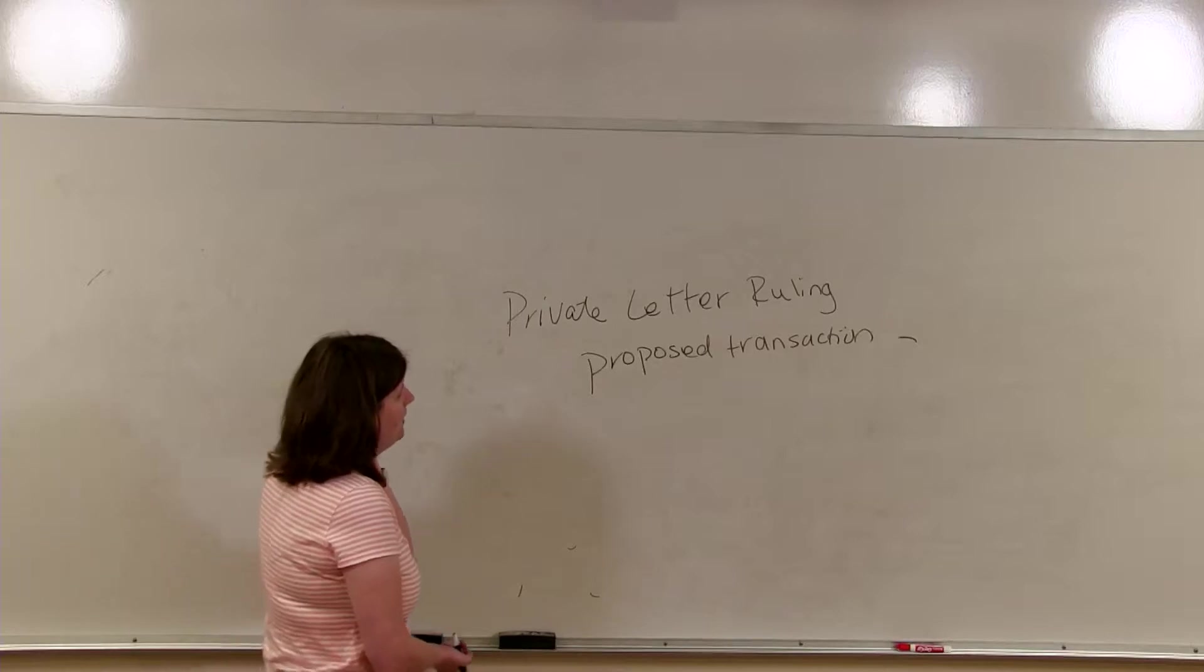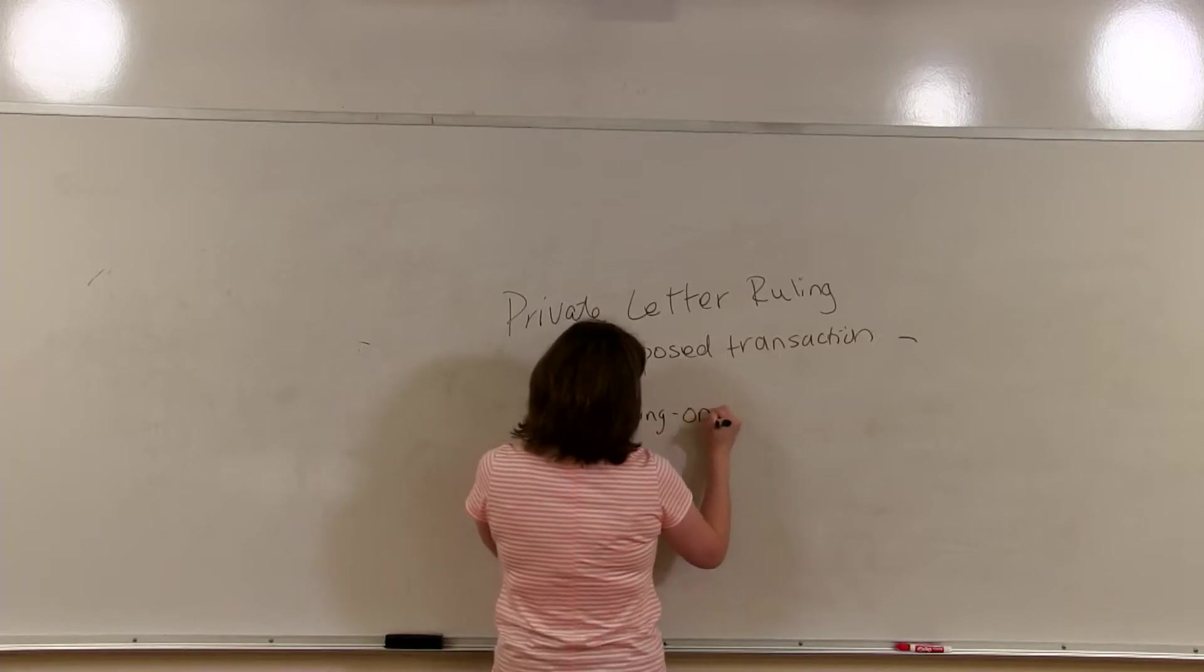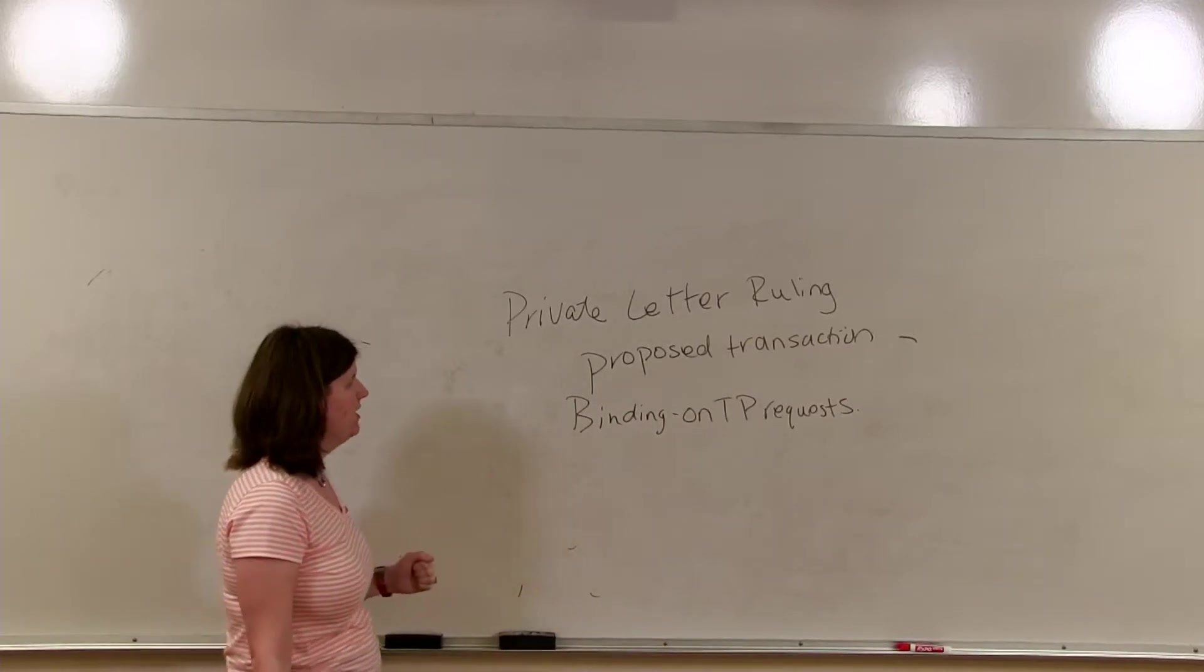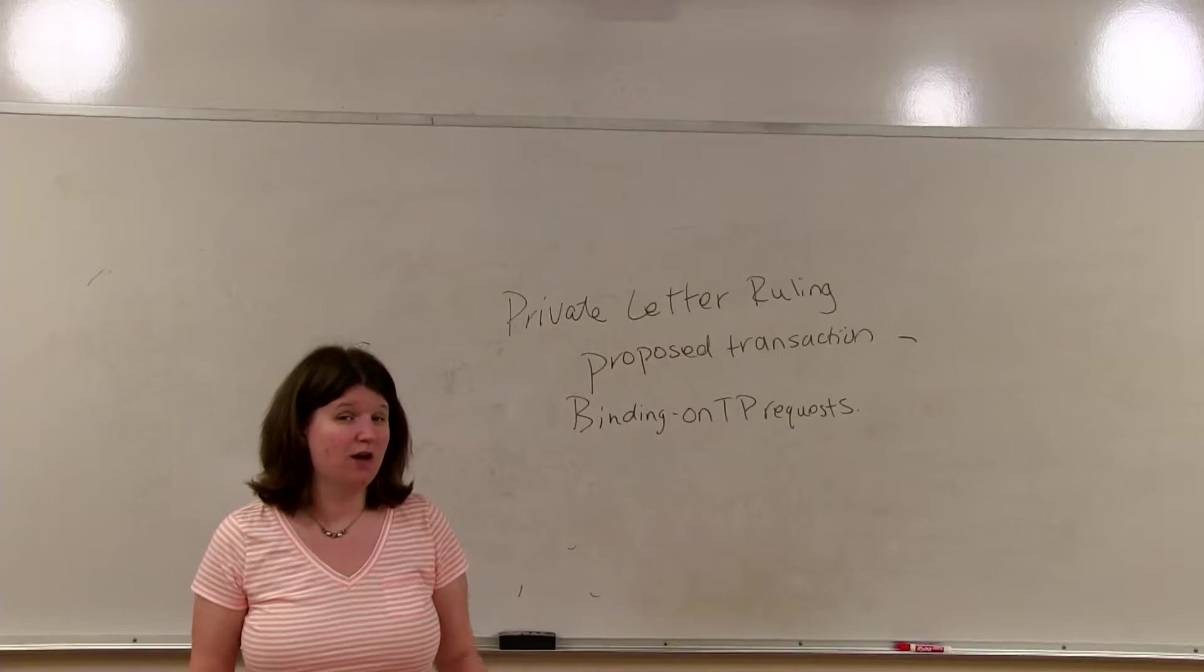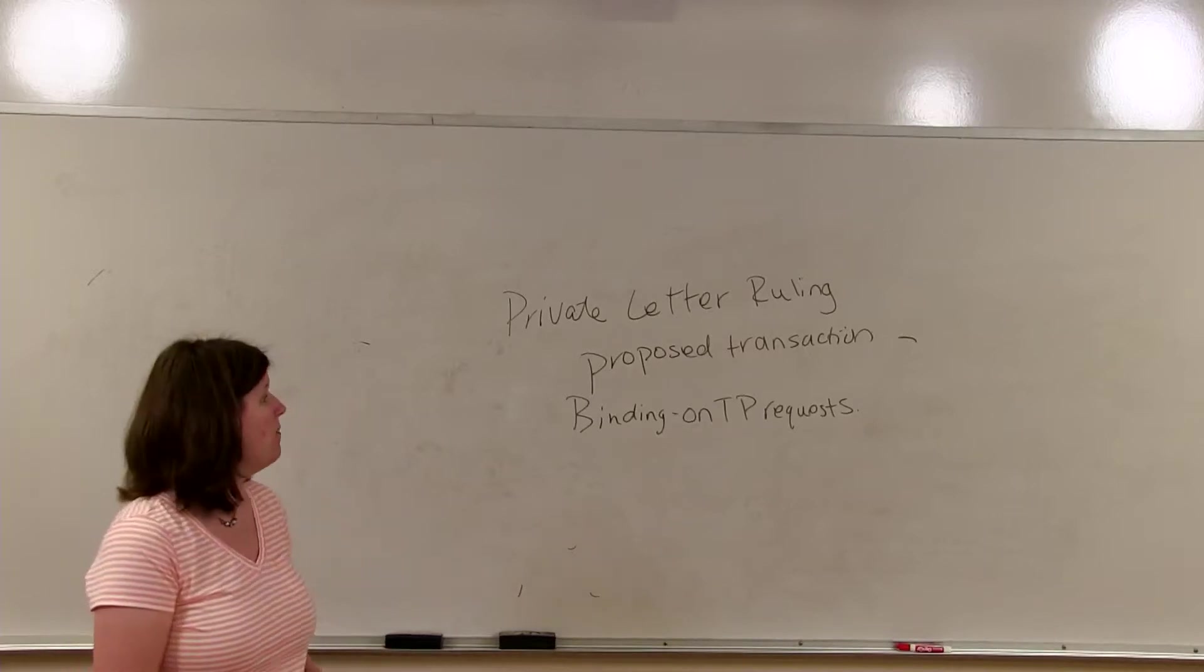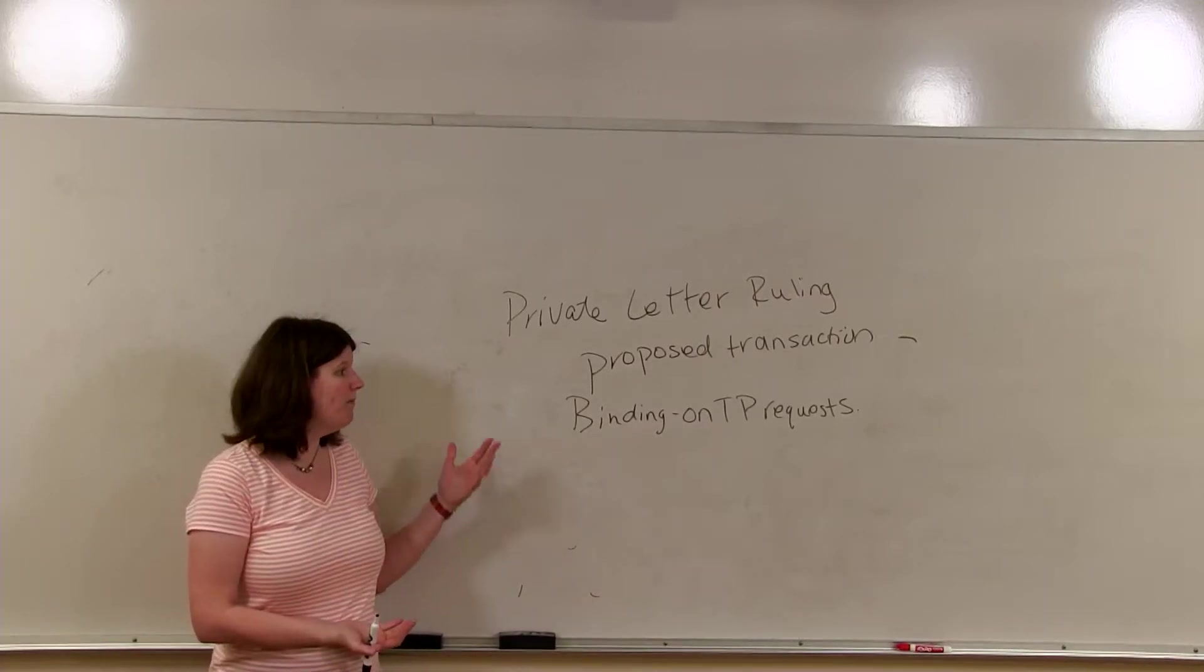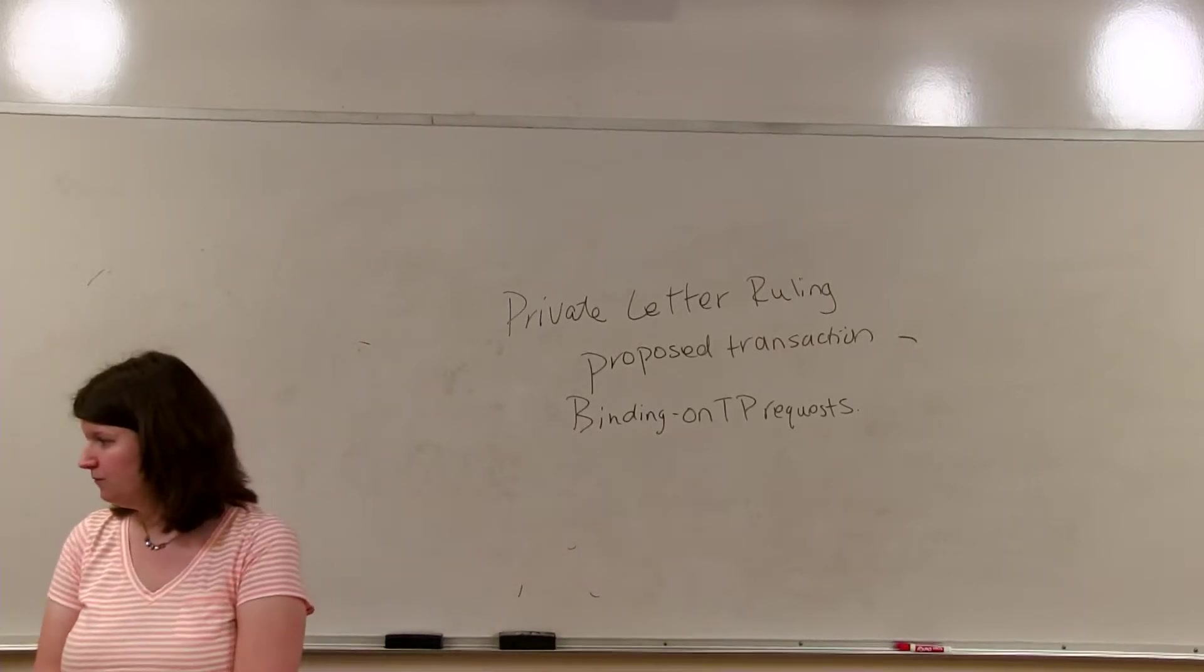So PLRs are really only used with big transactions, with big numbers because they are so costly to obtain. PLRs are only binding on the taxpayer that requests it. However, because of the Freedom of Information Act, everybody can see PLRs. They are redacted, meaning we can't see the information of what taxpayer is requesting it or a lot of the facts of their transaction. But we can see the PLRs. Now PLRs are not binding or law to other taxpayers, but they can be cited as precedent to avoid penalties.